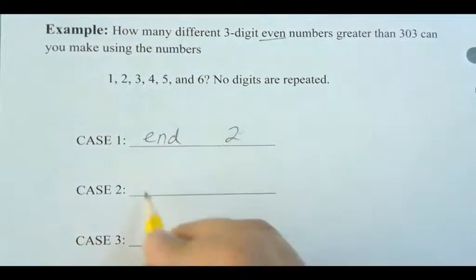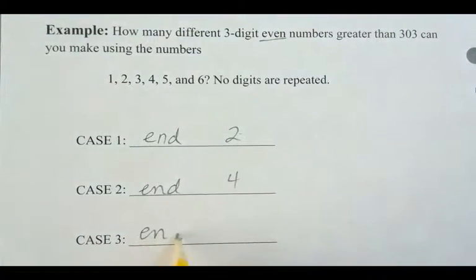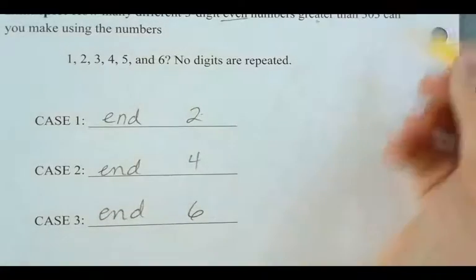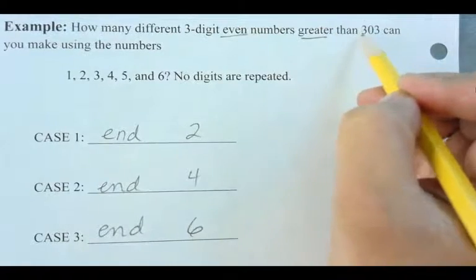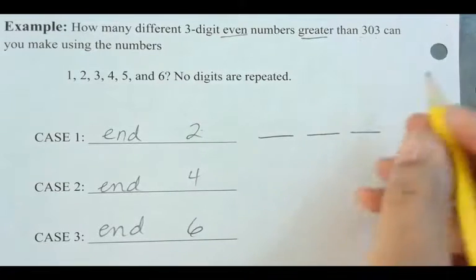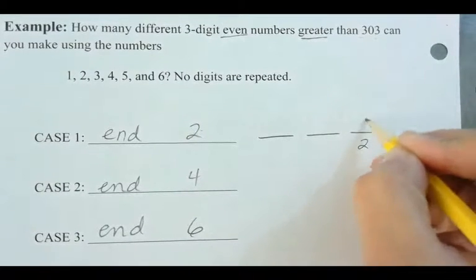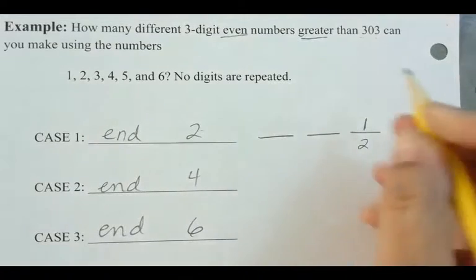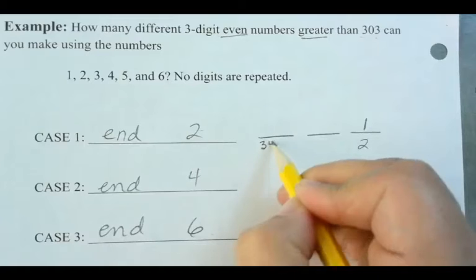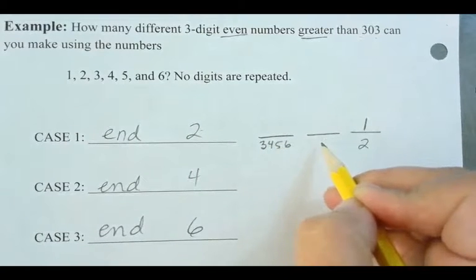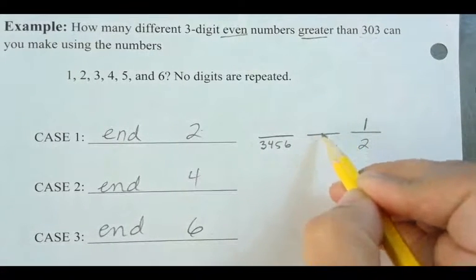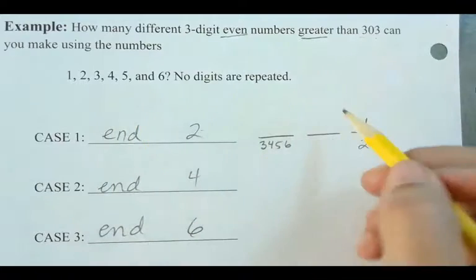End in a 2, end in a 4, or end in a 6. Now, if it has to be greater than 303, I just need to make sure that what I'm picking actually makes that happen. So if I end in a 2, there's only one way to end it here. How many numbers can I put here? I can use 3, a 4, a 5, or a 6. You can't use a 3. I can use a 3 because I don't have a 0. I don't have a 0 in this mix, right? I'm glad you brought that up.